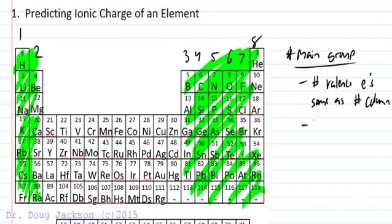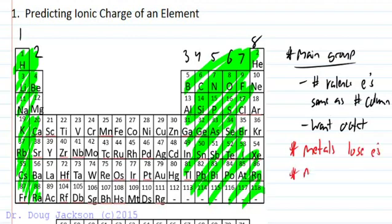All of our elements want an octet of electrons, and that's going to govern what we do in order to form these ions. We want to make a couple of rules: metals lose electrons to form a positive charge, and nonmetals gain electrons to form a negative charge.